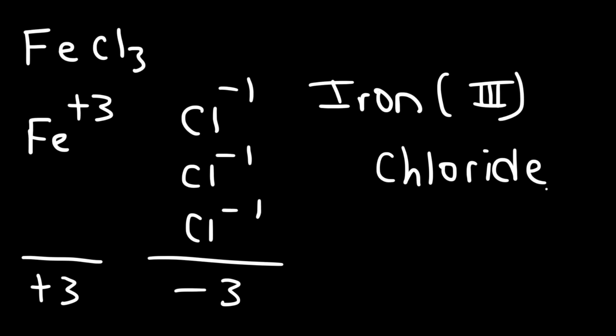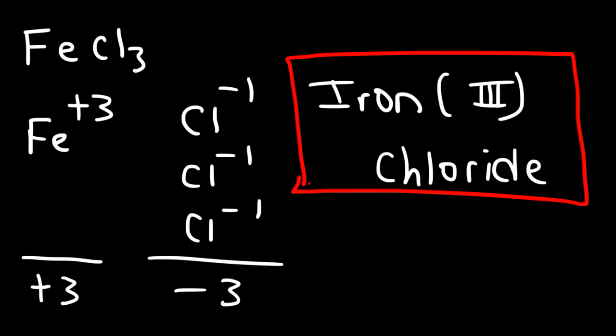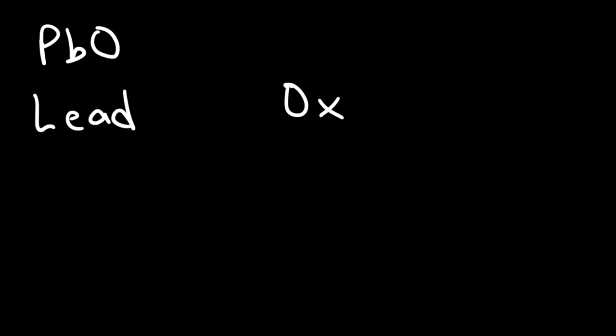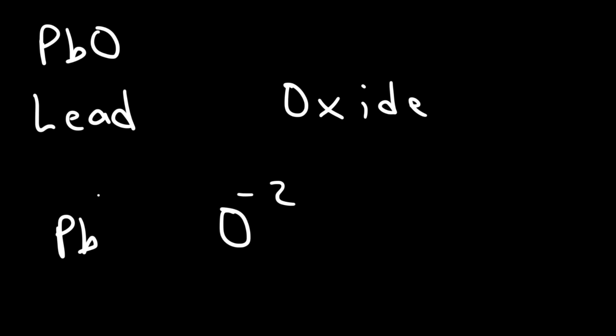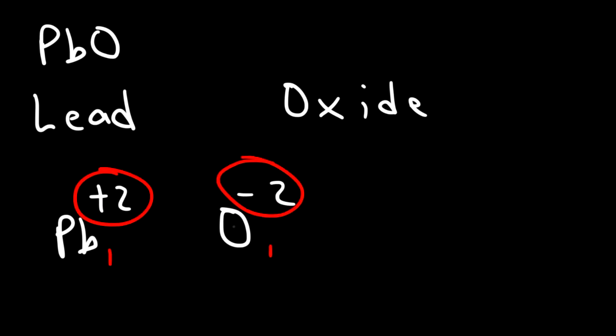If you need to review Roman numerals, search 'Roman numerals organic chemistry tutor' on YouTube. For PbO: Pb is lead, O becomes oxide. Oxygen has a −2 charge and we have one of each ion, so lead must be +2. This is lead(II) oxide. Note: some teachers prefer writing ions as Pb²⁺ rather than +2 — check your teacher's preference.